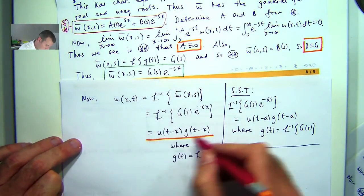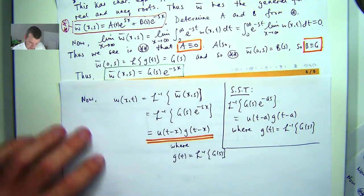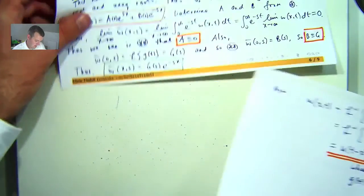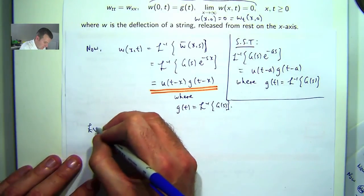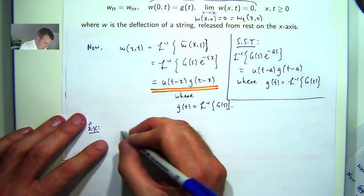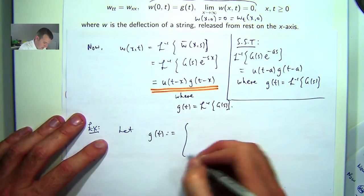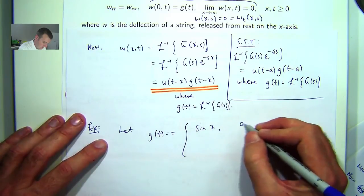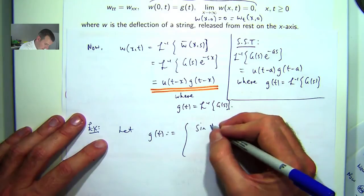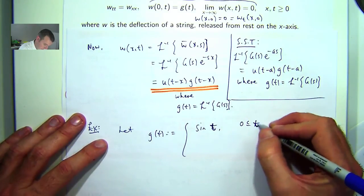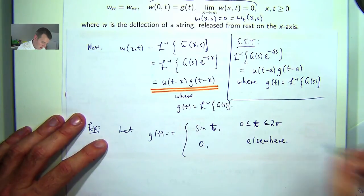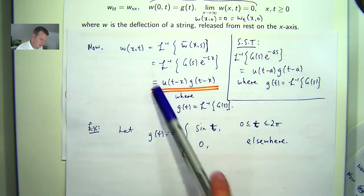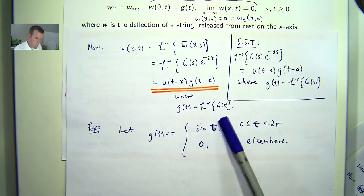Our question is what might a suitable G of t be here? So I'm going to just give a little exercise for this. Let G of t be the sine function for t between 0 and 2 pi and 0 everywhere else. What you can do is then write out this solution in terms of this particular function G of t.